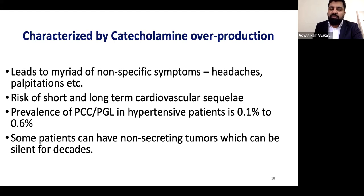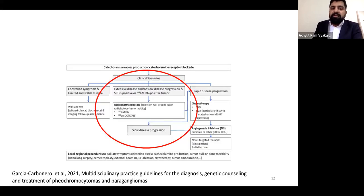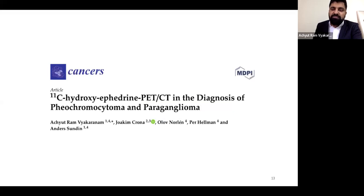The prevalence of PCC or PGL in hypertensive patients is around 0.6%. In some patients, there are non-secreting tumors which can remain silent for decades. Identification of the patient's genetic status helps us tailor treatment better with different theranostic and diagnostic agents. If there is extensive disease, there are good nuclear medicine-related solutions. We will now talk about hydroxyephedrine PET-CT in the diagnosis of pheochromocytoma and paraganglioma.